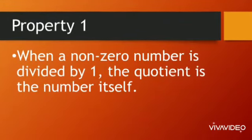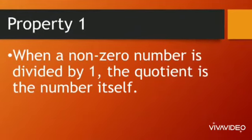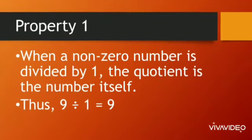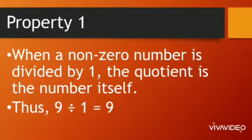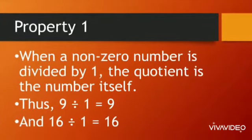the quotient is the number itself. Thus, 9 divided by 1 is equal to 9 and 16 divided by 1 is equal to 16.